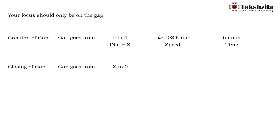And what is the closing of the gap? The gap goes from X to 0. This is the interesting part: the same distance X at a speed of 36 kilometers per hour, and we need to find the time.